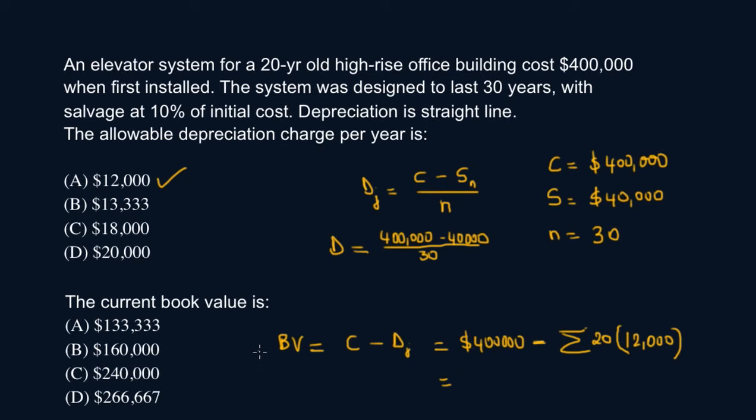So your answer is B. You got to be careful here as well. This is how much it has depreciated so far. So it hasn't lasted 30 years yet, it's expected to last 30 years, but it hasn't lasted 30 years. So far it's a 20-year-old building, so that's why we're using 20 here. So this is $160k.